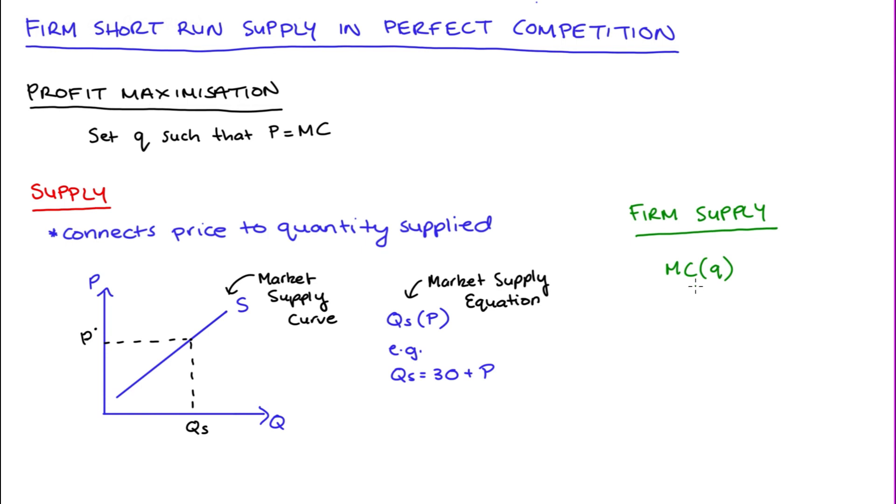then joining that with our decision rule that price has to be equal to marginal cost, you can see that our marginal cost gives us that relationship between the price in the market and the quantity that the firm will produce. So let's go through a quick example to demonstrate.